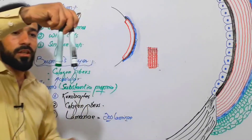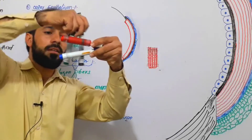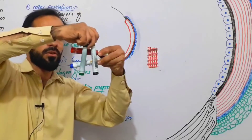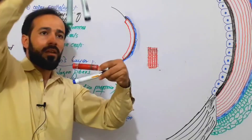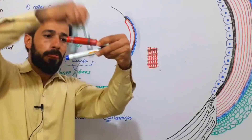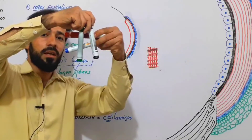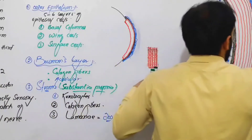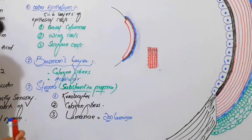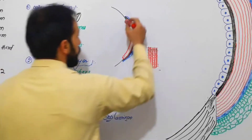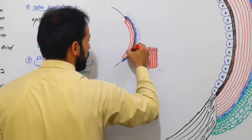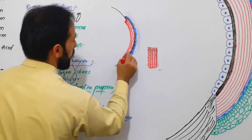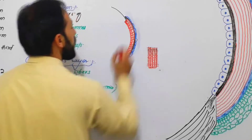For example, this is the anterior vertical layer, this is the posterior horizontal layer, then there is a vertical layer, then a horizontal layer, then vertical and horizontal. So they make special laminae — vertical laminae, then again horizontal laminae. There are about 200 laminae formed by these collagen fibers and through those fibers the light rays are passing.